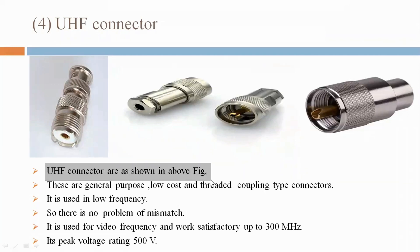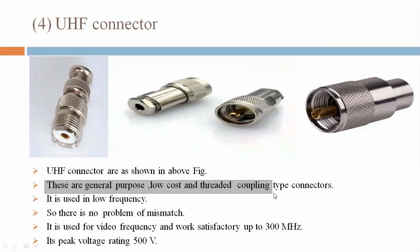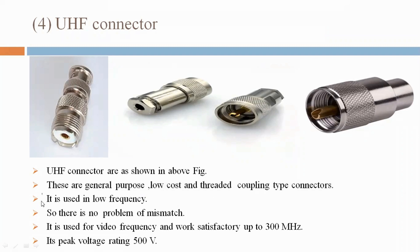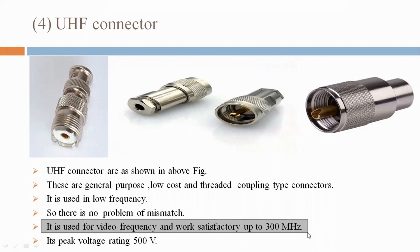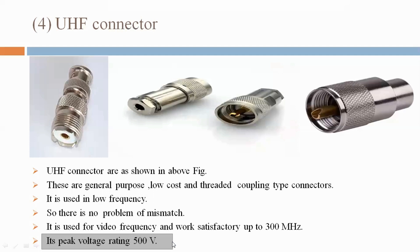UHF connectors are as shown in the above figure. These are general purpose, low cost, and threaded coupling type connectors. They are used in low frequency, so there is no problem of mismatch. They are used for video frequency and work satisfactorily up to 300 MHz. Peak voltage rating is 500 volt RMS.